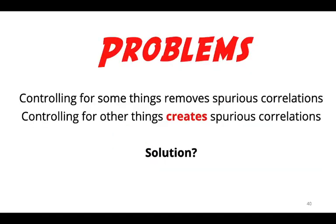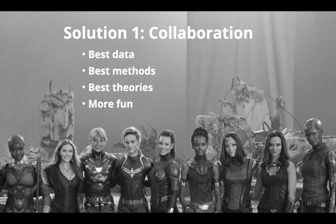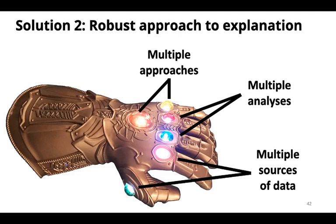To summarize the problem: controlling for some things removes spurious correlations — that's the standard approach. But controlling for other things creates spurious correlations. There are five solutions. First, collaborate with people to get good data, good methods, and good theories. Second, adopt a robust approach to explanation: use multiple analyses of data and multiple sources of data to get a clearer picture from multiple different angles.